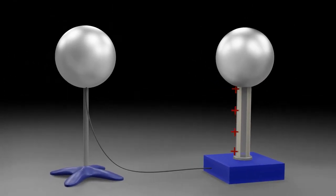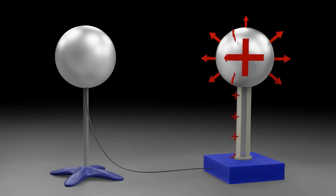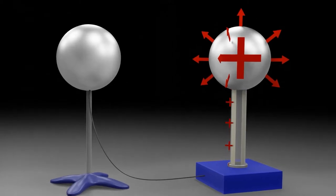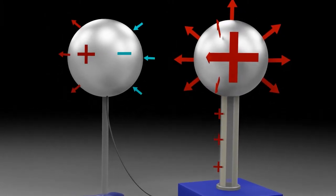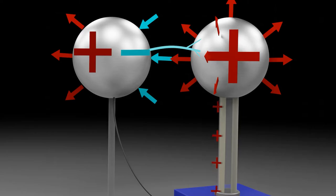As the generator's dome builds up a positive charge, the ground sphere builds up a negative charge by induction. When the two spheres are brought close together, the negative charges on the ground sphere and the positive charges on the generator are attracted to each other.